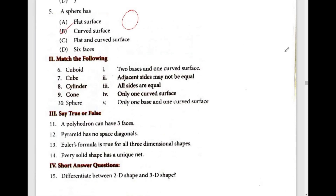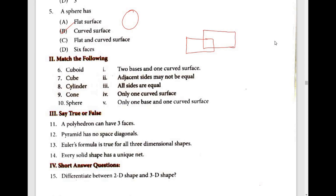Next, Roman II — match the following. Sixth question: cuboid. Here is a shape and here is a property; we can match the shape. A cuboid has two rectangles. Looking at the shape, you can see two adjacent sides that are equal — here is equal, here is square on one face, and here is a rectangle on another. So cuboid matches the second option.